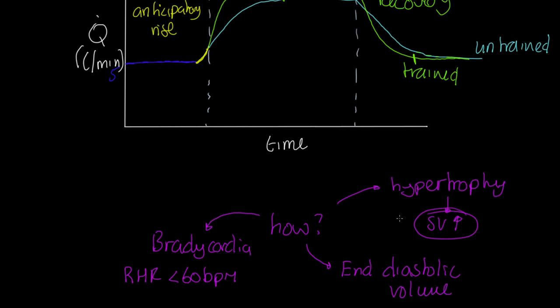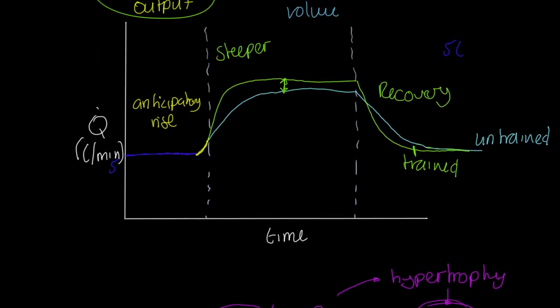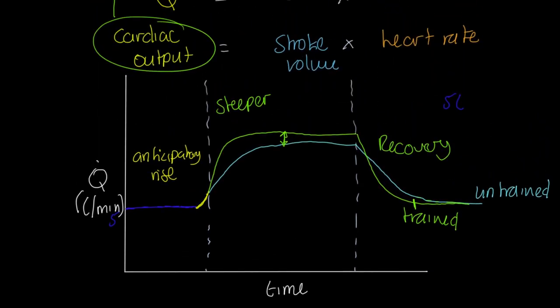These are some differences between trained and untrained athletes that cause the patterns in the graph I've sketched. Hope that's useful. Thanks.